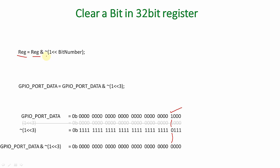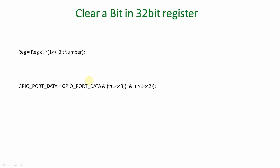The full sequence for clearing a bit is: register = register & ~(1 << bit_number). You can also chain this — for example: GPIO_PORT_DATA = GPIO_PORT_DATA & ~(1 << 3) & ~(1 << 2) — to clear bit number three and bit number two together in a single expression. I hope you've learned these basic techniques using bitwise and logical operators in C for setting and clearing particular bits in a microcontroller register without disturbing other bits. See you in the next video, thanks for watching.